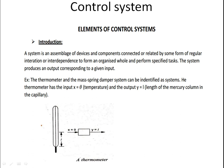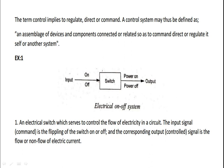Next, what is meant by control? Control implies regulate, direct, or command. A control system may be defined as an assemblage of devices and components connected or related so as to command, direct, or regulate itself or another system. This is the definition for a control system — assembling devices and components with respect to command, direct, or regulate another system.